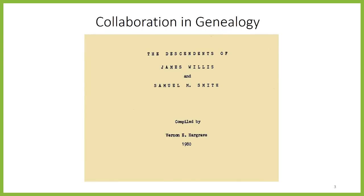Genealogists collaborating is also nothing new. People have worked together to collect and share family histories since long before the internet. In the 1970s, for example, my mother was contacted by a distant cousin researching the descendants of my third great-grandfather James Willis, born in 1806. He compiled all the information he received into a 180-page typewritten photocopied spiral-bound book, which he then mailed to everyone who had shared information with him. He also sent annual updates in his Christmas newsletter. Today we have many more tools at our disposal to connect with cousins, gather information, and share it with other descendants. One such tool is WikiTree.